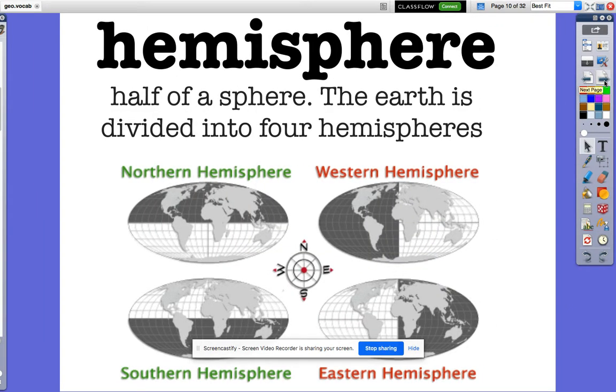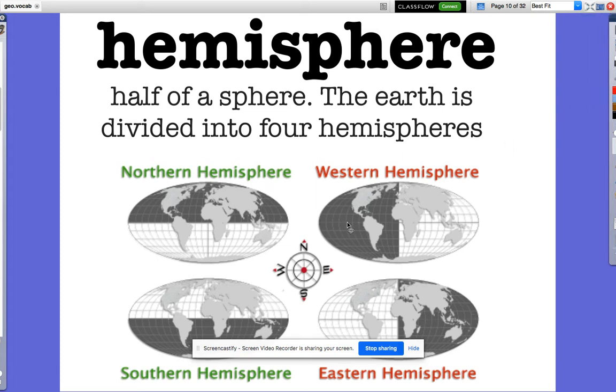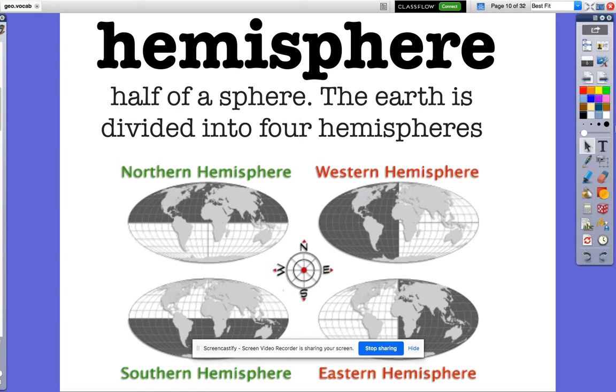Our next definition is hemisphere: half of a sphere. The earth is divided into four hemispheres: the Northern Hemisphere, Western Hemisphere, Southern Hemisphere, and Eastern Hemisphere.